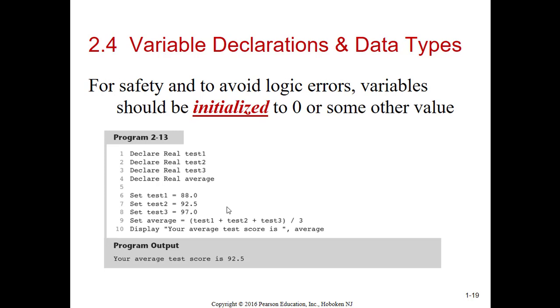This is creating four variables in memory called test1, test2, test3, and average. Then they're setting test1, 2, and 3. Then they're calculating the average. They're adding up the three tests, then dividing it by three. How do I know that? Because the parentheses says I want you to do parentheses first.